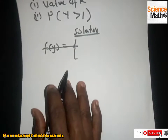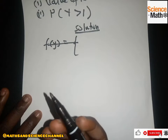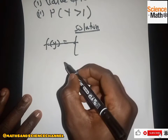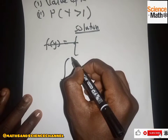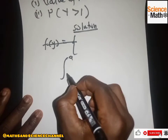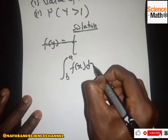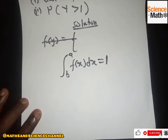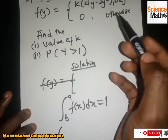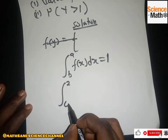For the first part we have to find the value of k. For a PDF, the condition is that the integral from the lower limit to the upper limit of f(x) dx equals one. From the question, our upper limit is two and our lower limit is zero.